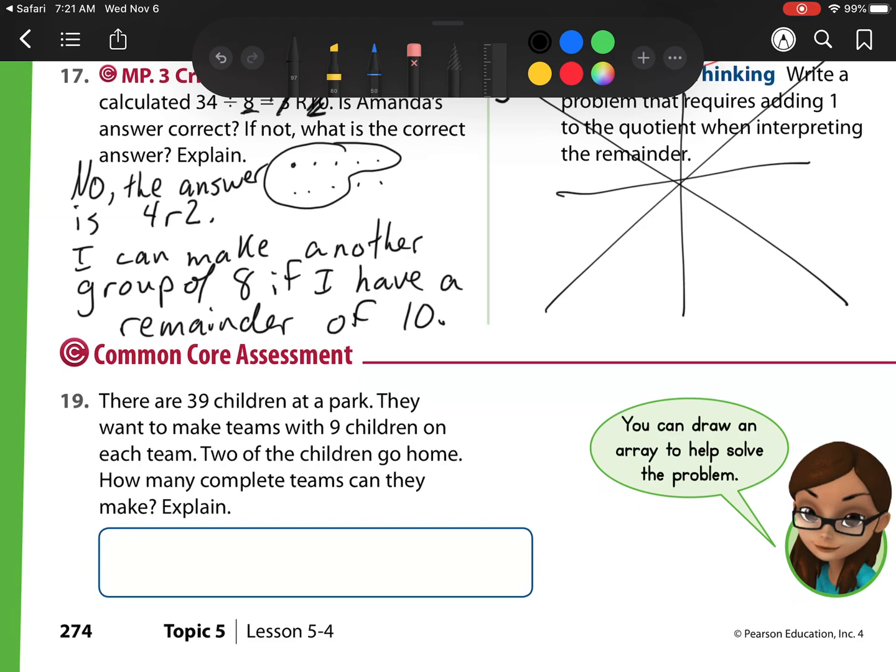Number 19, there are 39 children at a park. They want to make teams with 9 children on each team. 2 of the children go home. How many complete teams can they make? Explain. We have 39 children at the park. But here, we have 2 of the children go home. So I need to take away those 2. So I'm actually left with 37 children with 9 on each team. So I need to do 37 divided by 9. So I would have 9, 18, 27, 36, 45. And here, I see I have 36. So that would be 1, 2, 3, 4. I can make 4 teams.